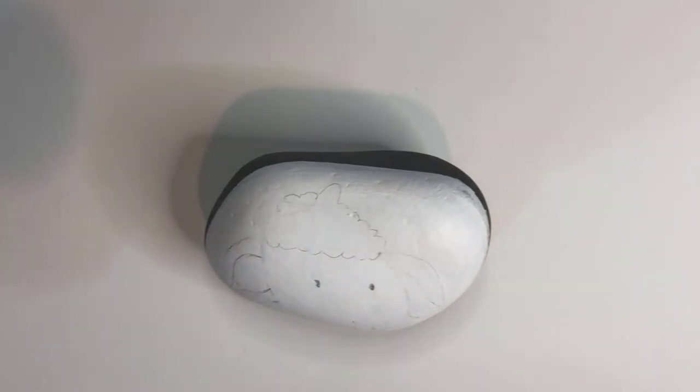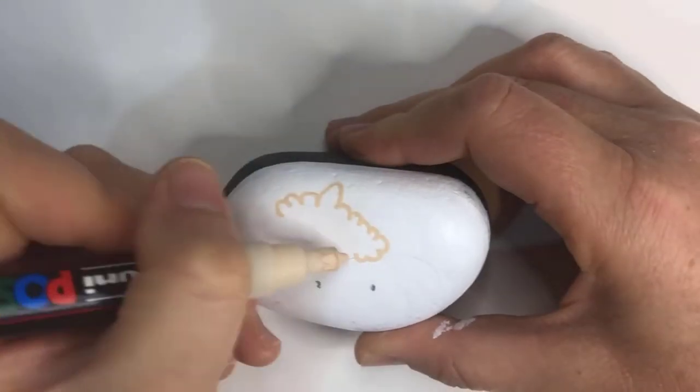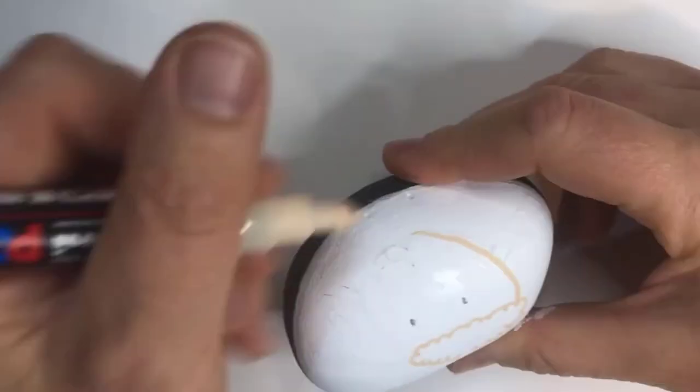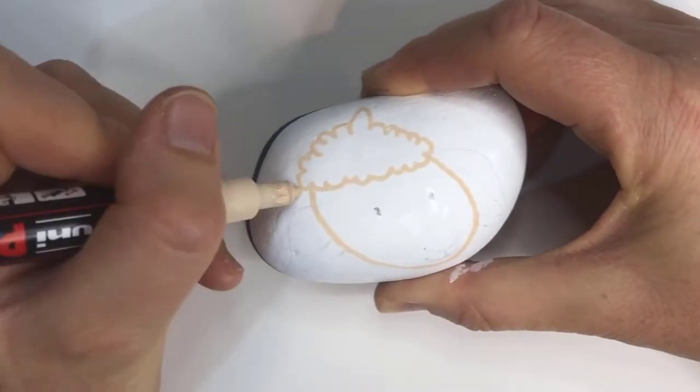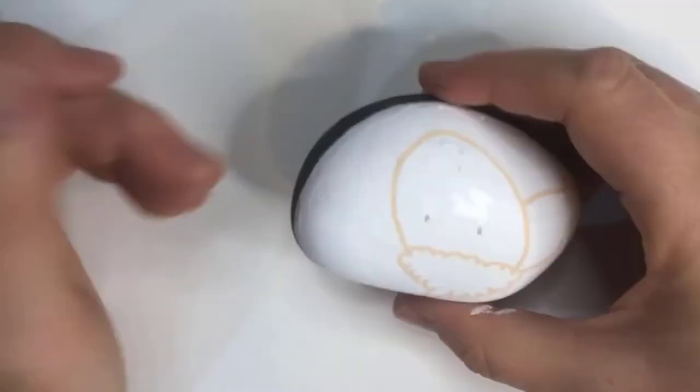Then start applying the colors in any order you like. Make sure you apply at least two coats of the pink to the ear so that you get a bright, vibrant and even finish. But for the beige, I only apply a single coat.